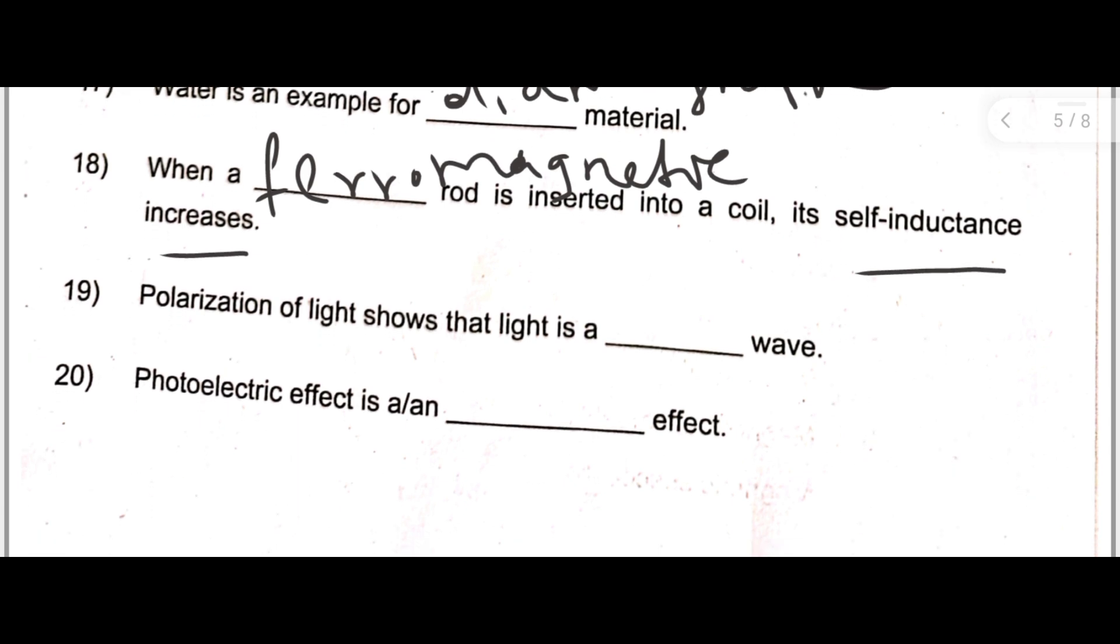19th one: Polarization of light shows that light is a dash wave. Here the correct answer is transverse wave. It indicates that light is a transverse wave.